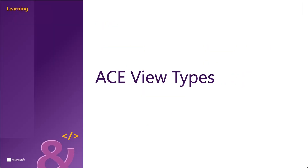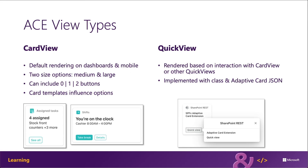The card view is the default view of an ACE when it's rendered. Card views are rendered in one of two sizes: medium or large. The medium view can contain some text and one or no buttons. The large view can contain text, up to two buttons, and optionally an image, as seen in the card example with the title 'Shifts' and the primary text 'You're on the clock.'